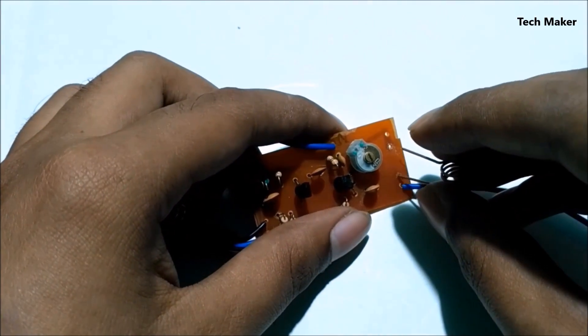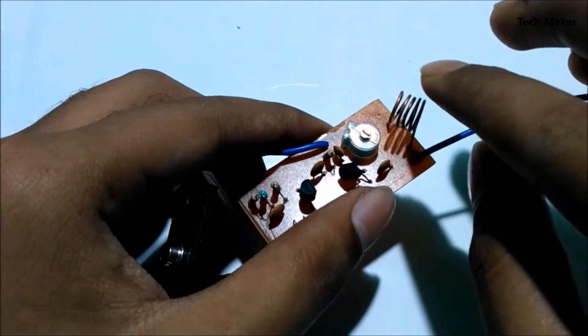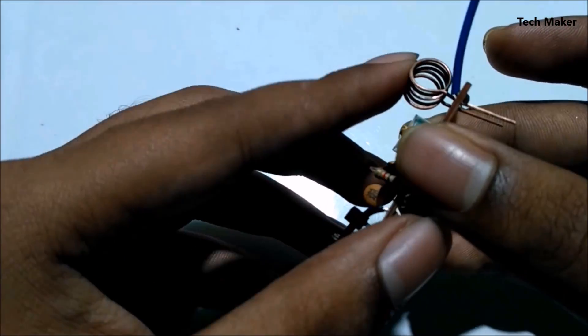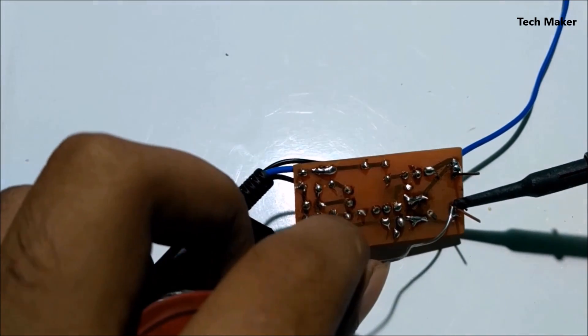Now solder the inductor to the circuit and then the antenna. In my case, hookup wire is used as antenna. You can see it beside the inductor.